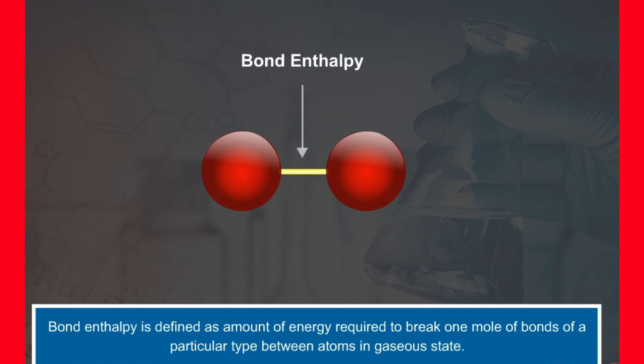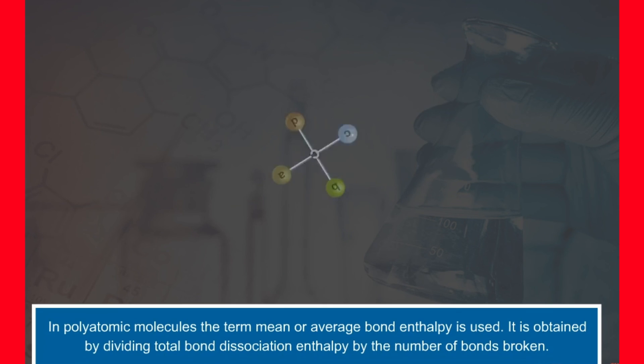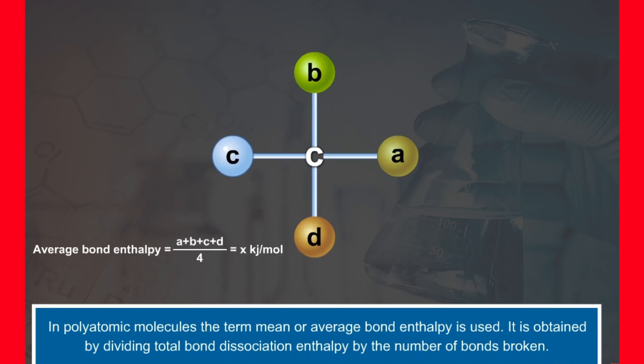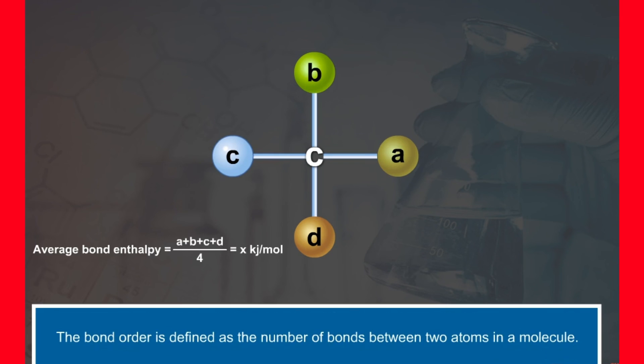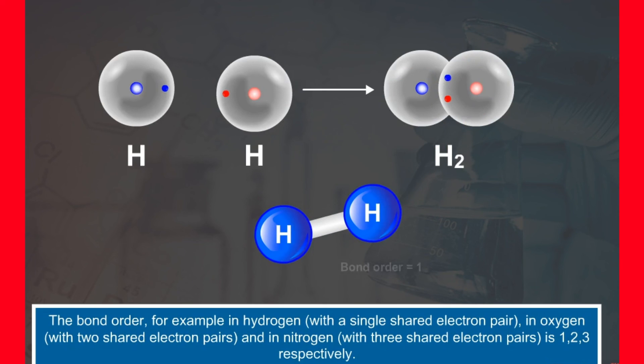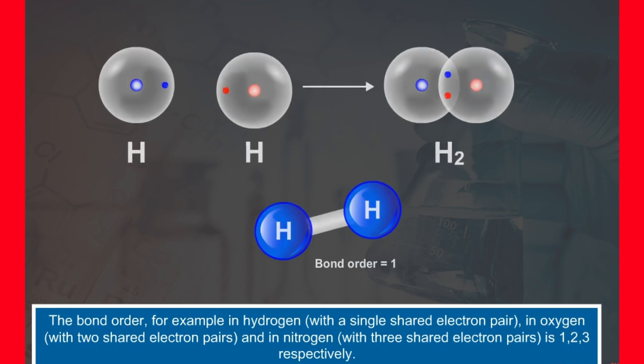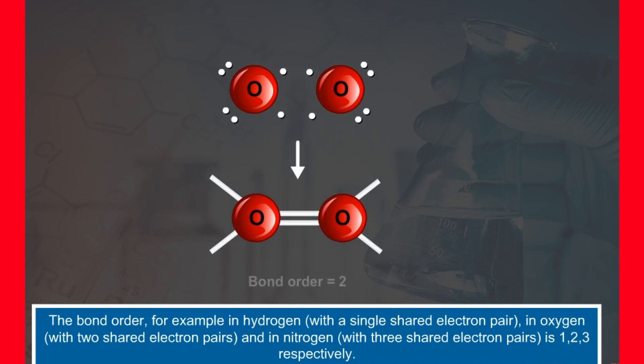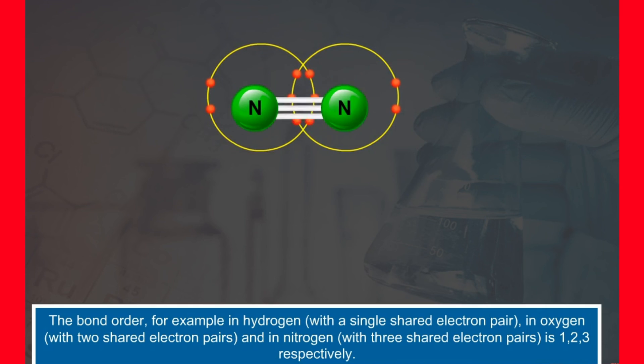The strength of an atomic bond is ascertained with the amount of energy required to break it. This energy is called bond enthalpy. The unit of bond enthalpy is kilojoules per mole. In polyatomic molecules, the term mean or average bond enthalpy is used. It is obtained by dividing total bond dissociation enthalpy by the number of bonds broken. The number of bonds between two atoms in a molecule gives the bond order. The bond order, for example, in hydrogen with a single shared electron pair, in oxygen with two shared electron pairs, and in nitrogen with three shared electron pairs is one, two, three respectively.